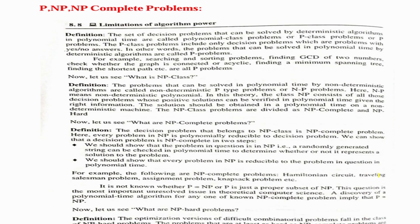We have P, NP, and NP complete problems. The set of decision problems that can be solved by deterministic algorithms in polynomial time are called polynomial class problems. The P class problems include only decision problems, which are problems with yes or no answers. In other words, problems that can be solved in polynomial time by deterministic algorithms are called P problems. For example: searching and sorting algorithms, finding the GCD of two numbers, checking whether a graph is connected or acyclic, and finding the minimum spanning tree — all are P problems, solved using deterministic algorithms in polynomial time.